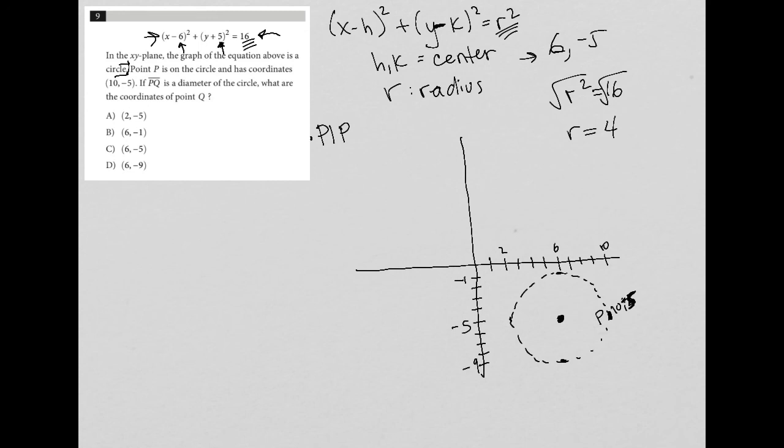If PQ is a diameter of the circle, what are the coordinates of point Q? If PQ is a diameter, we go straight across the circle through the center. Starting at 10, negative 5, I go straight across through the center to another point I'd already figured out, which is 2, negative 5. Therefore, my answer is choice A.